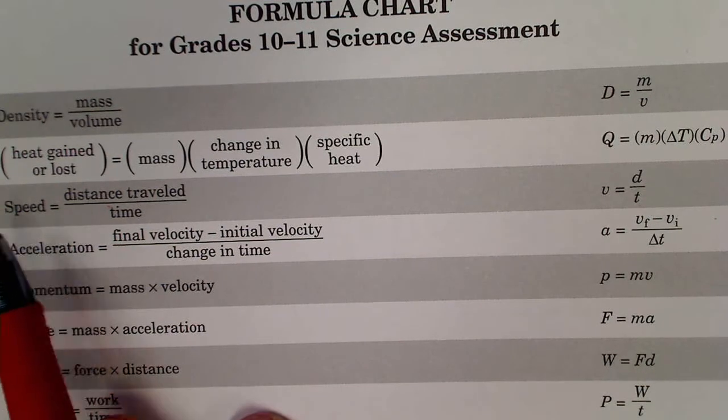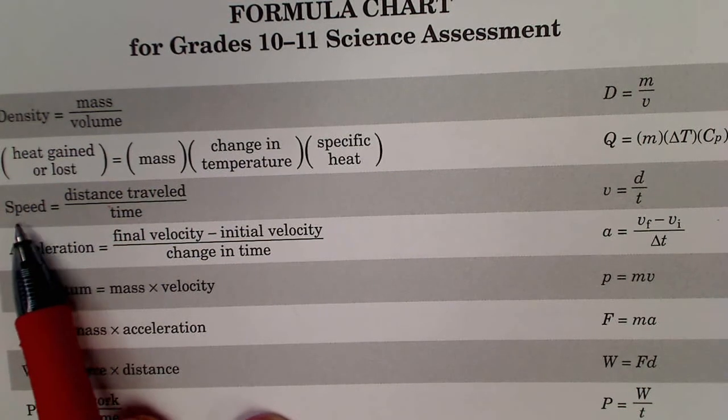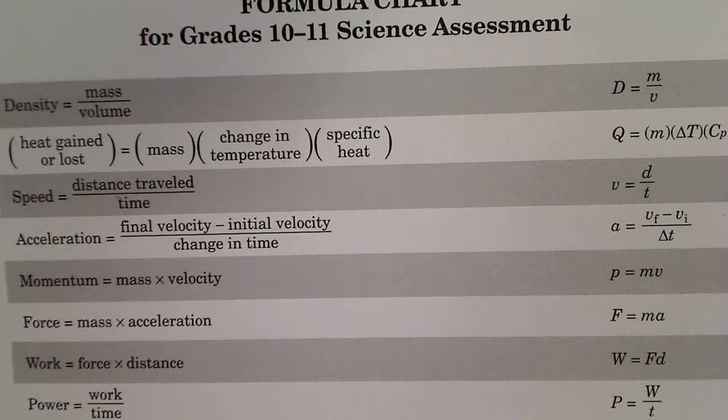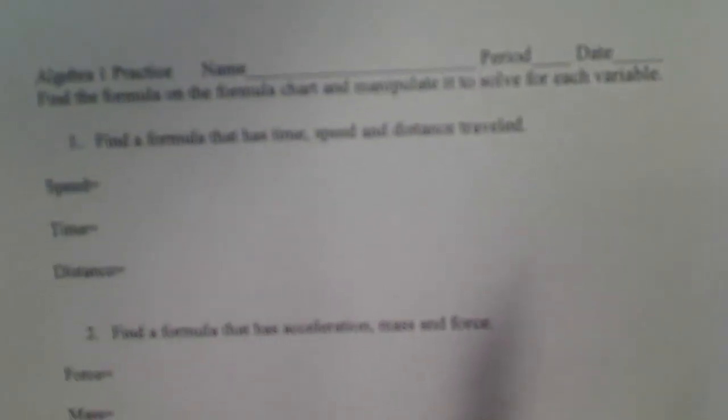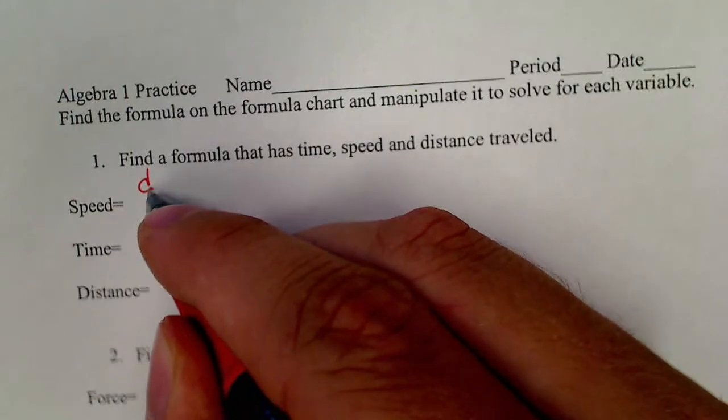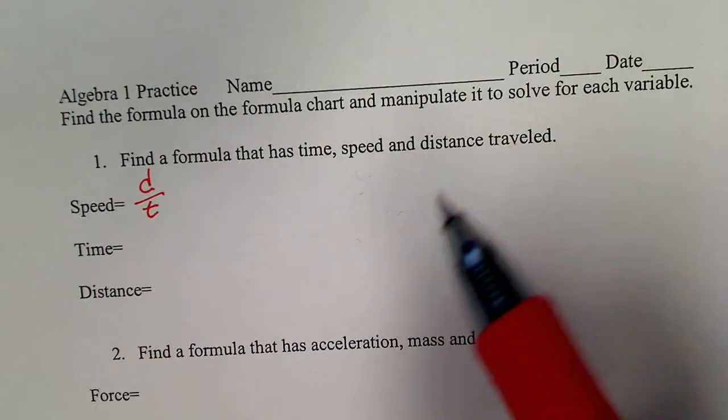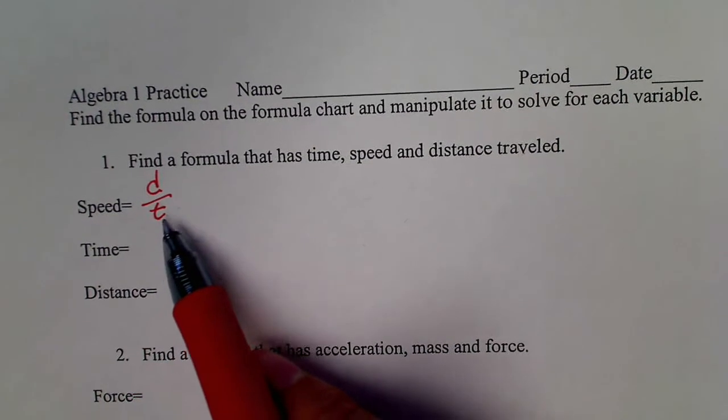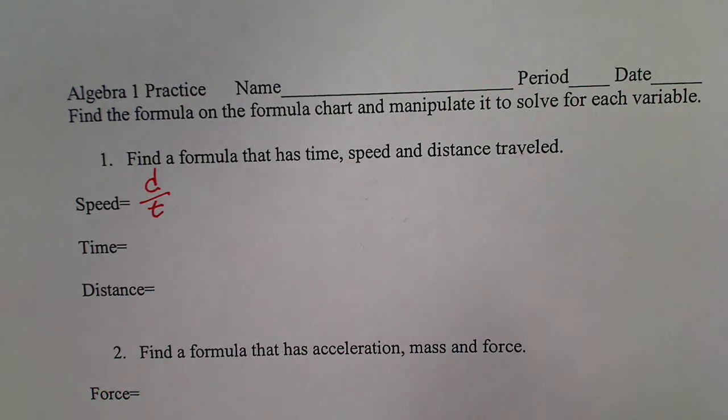The V stands for speed, first of all, because S's look like 5's. Also, this V is actually velocity. So, speed equals distance over time. I recommend when you write your T's, you use a cursive T with a little tail. It keeps from looking like plus signs.